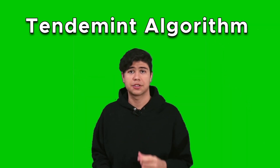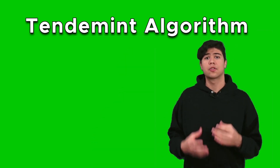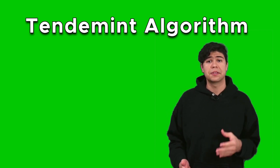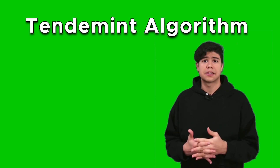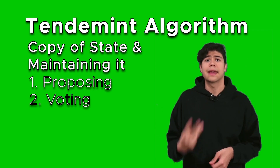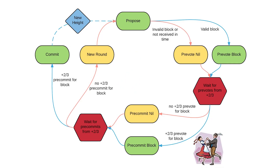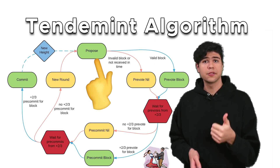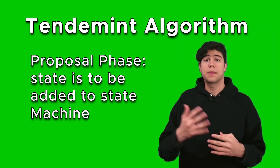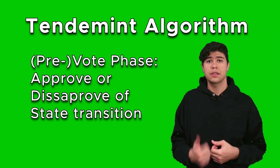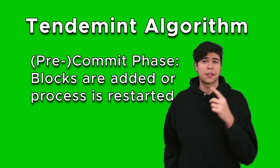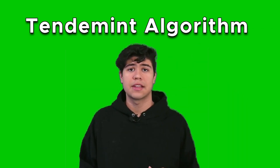Tendermint is run by nodes — computers with globally defined public keys — that form a predefined validator set, which can comfortably have 175 nodes. Validators maintain a full copy of the replicated state, propose new states, vote on new states, and add new states. Tendermint has three rounds, each needing over two-thirds approval to proceed: the proposal phase, the pre-vote and vote phase, and the commit and pre-commit phase. In the proposal phase, a state is proposed to be added to the state machine. In the pre-vote phase, nodes approve or disapprove. In the pre-commit and commit phase, either the validator set adds the block, or the process starts over.